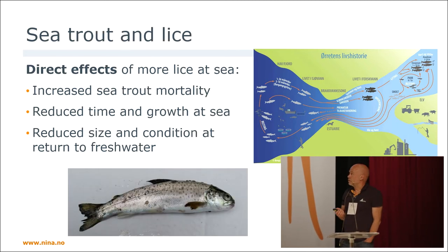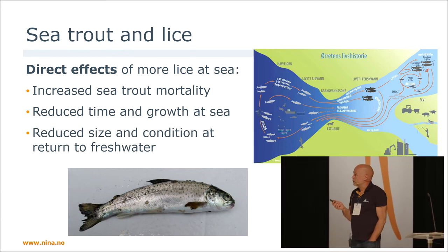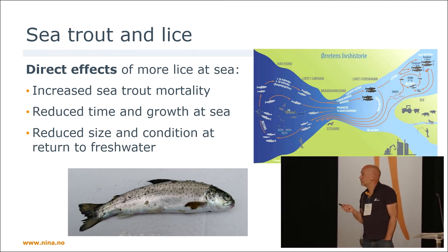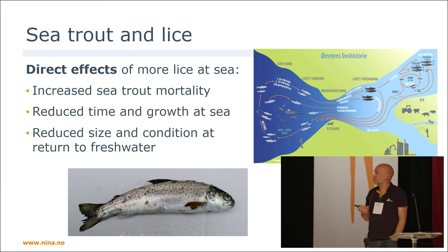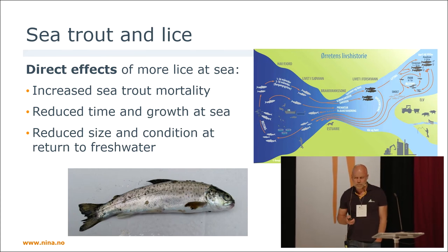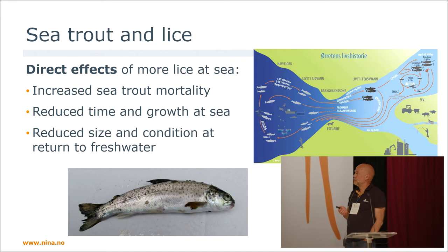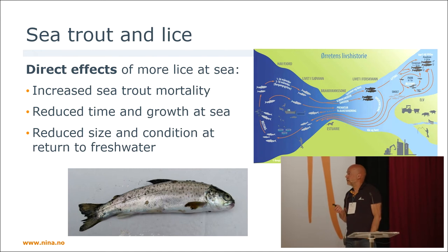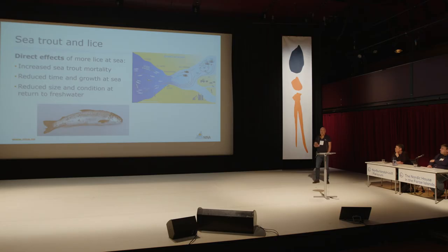The direct effects of sea lice at sea include increased mortality and reduced time and growth at sea — which is what is planned to be included in the traffic light system — and the consequences for the trout: reduced size and condition at return to fresh water.